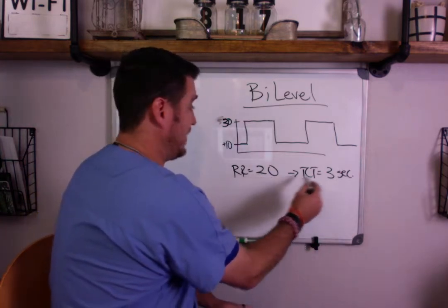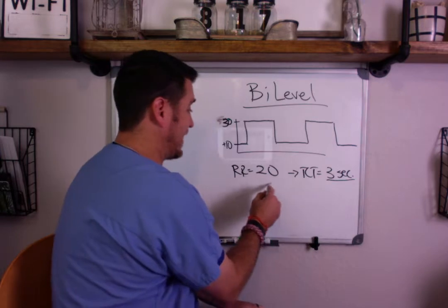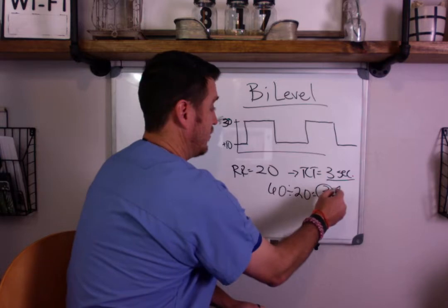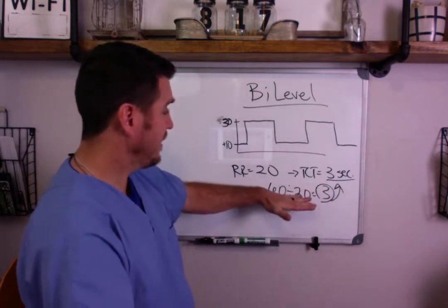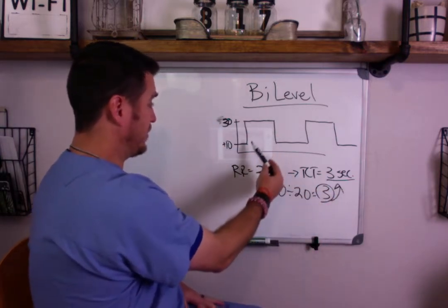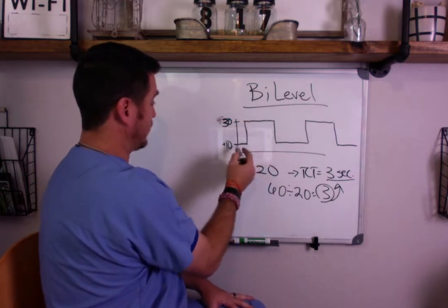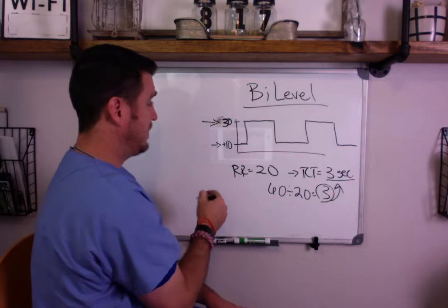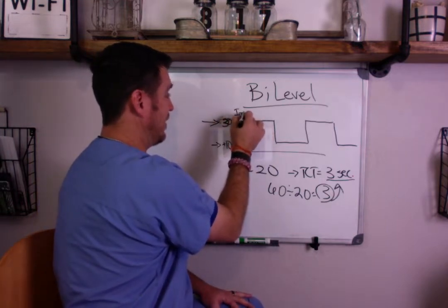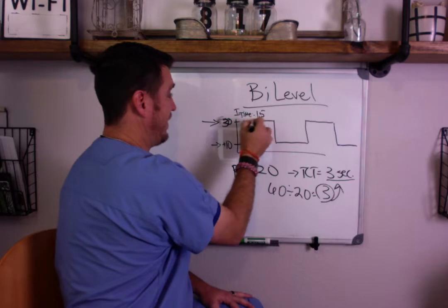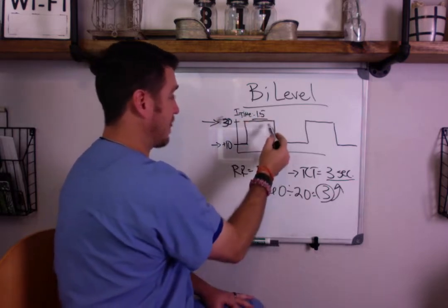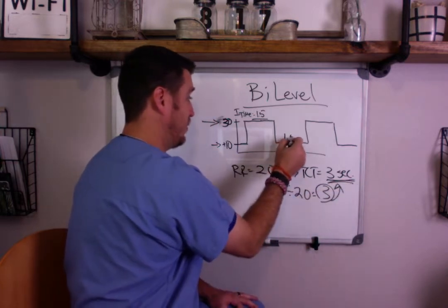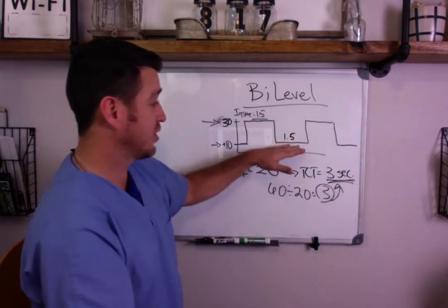A respiratory rate of 20 equals a total cycle time of three seconds. If you're at a PEEP of 10 and an inspiratory pressure of 30 with an I time of 1.5 seconds, that's exactly half your total cycle time, which means you'll also spend 1.5 seconds in pressure low — a true one-to-one I to E ratio.